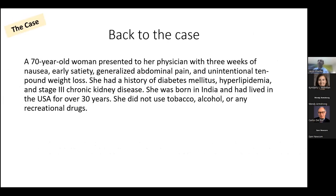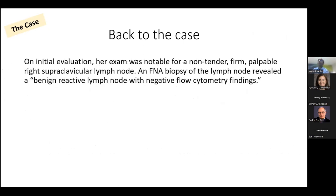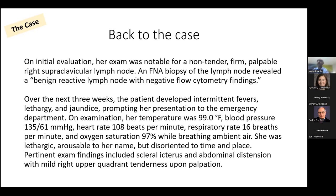Now let's return to the case. This is a 70-year-old woman presenting with subacute abdominal symptoms and weight loss. On initial evaluation, her exam was notable for a non-tender, firm, palpable right supraclavicular lymph node. An FNA biopsy revealed a benign reactive lymph node with negative flow cytometry findings. Over the next three weeks, she developed intermittent fevers, lethargy, and jaundice, prompting her presentation to the emergency department. On examination: temperature 99°F, blood pressure 135/61, heart rate 108, respiratory rate 16, oxygen saturation 97% on room air. She was lethargic, arousable to her name, but disoriented to time and place. Pertinent exam findings included scleral icterus and abdominal distension with mild right upper quadrant tenderness.